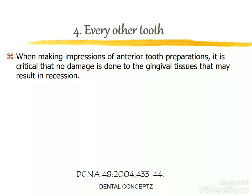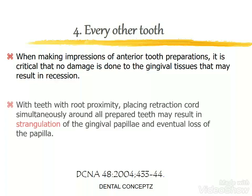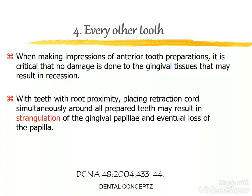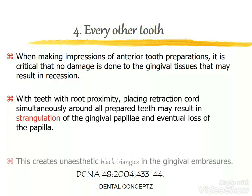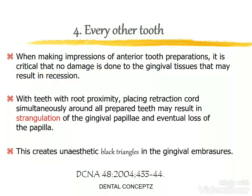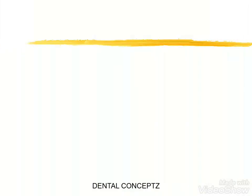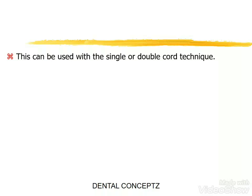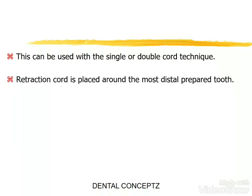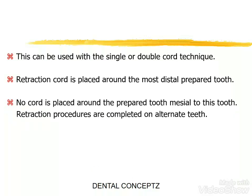The every other tooth technique is used when making impressions of anterior tooth preparations, where it is critical that no damage is done to the gingival tissues that may result in recession. With teeth in root proximity, placing retraction cord simultaneously around all prepared teeth may result in strangulation of the gingival papillae and eventual loss of the papilla, creating aesthetic black triangles in the gingival embrasures. This technique can be used with the single or double cord technique; the retraction cord is placed around the most distal prepared tooth, and no cord is placed around the tooth mesial to it — retraction procedures are completed on alternate teeth.